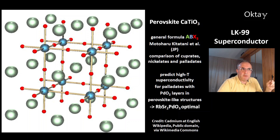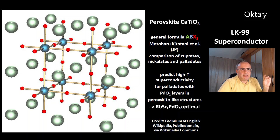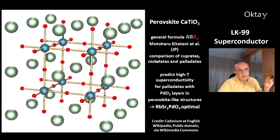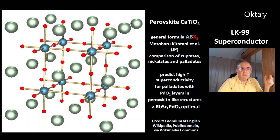There is new work from Motuharu Kitatani and his colleagues from Japan. They made a comparison of cuprates, nickelates, and palladates. Their work predicts high-temperature superconductivity for palladates that have PdO2 layers in their structures — similar to perovskite structures. These scientists predict one very promising candidate: rubidium strontium palladium oxide.